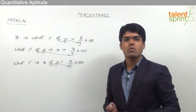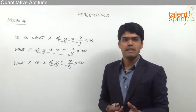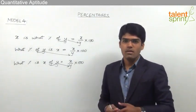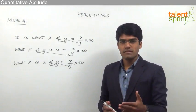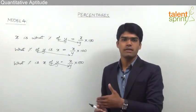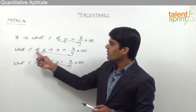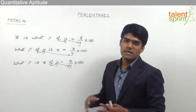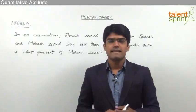For example, if the question is: r is what percent of k, the answer should be r by k into 100. Or if the question is: what percent of z is m, the answer should be m by z into 100, not z by m into 100. So the simple point is: whatever follows 'of' has to be taken in the denominator. This model is very frequently asked in data interpretation.